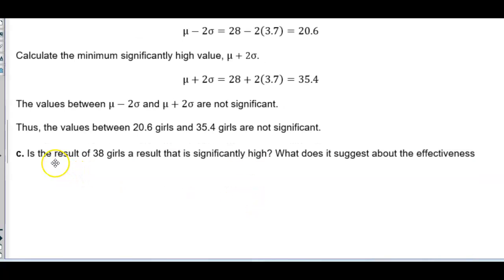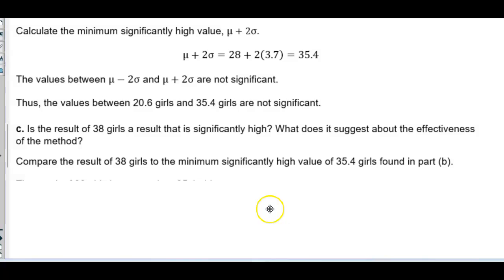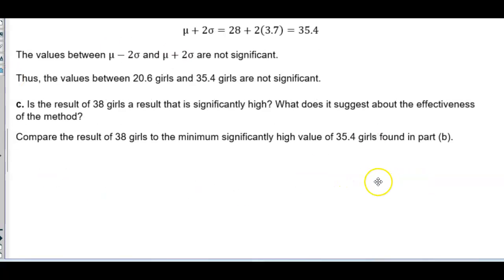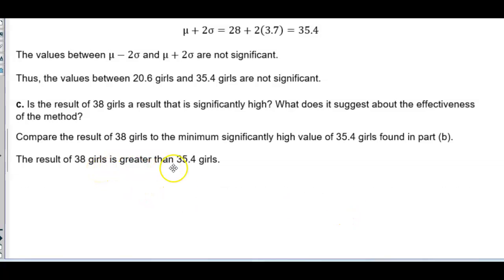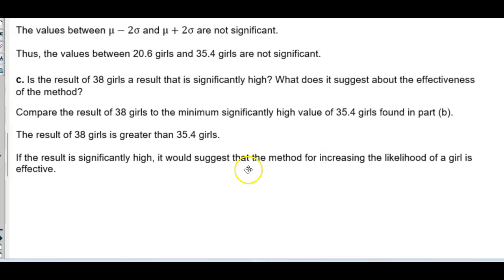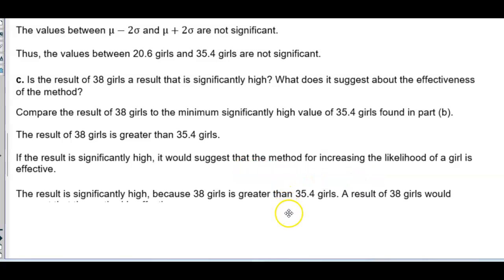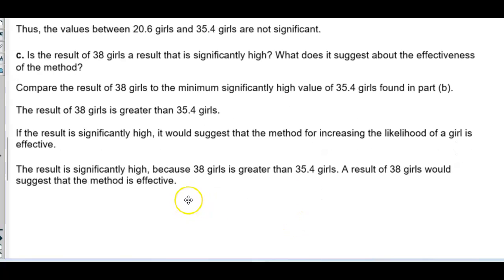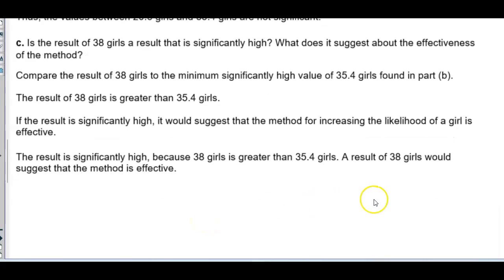For part C: is the result of 38 girls significantly high, and what does it suggest about the effectiveness of the method? Comparing 38 girls to the minimum significantly high value of 35.4 girls found in part B, we see that 38 is greater than 35.4. Therefore, the result is significantly high, which would suggest that the method for increasing the likelihood of a girl is effective.